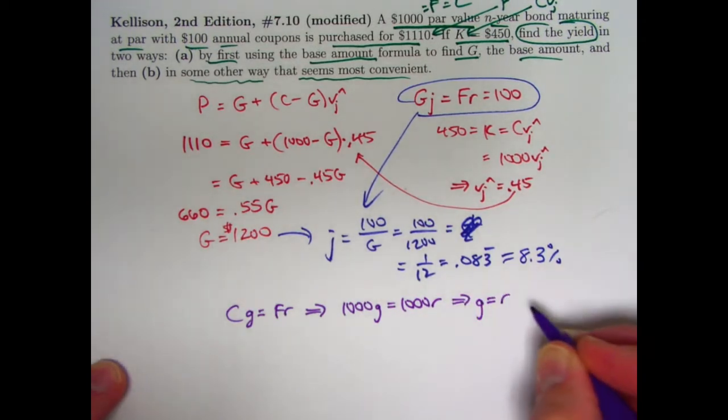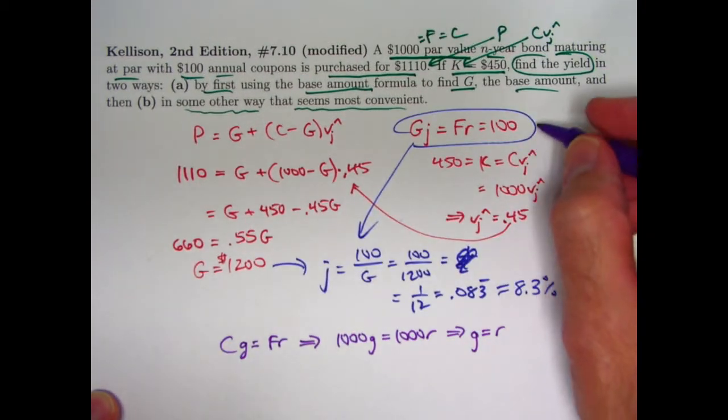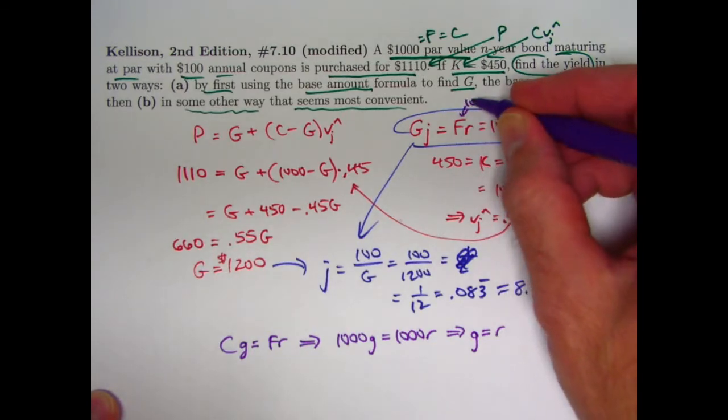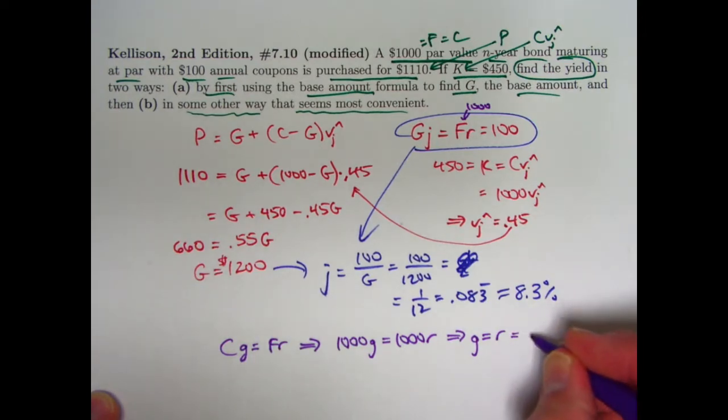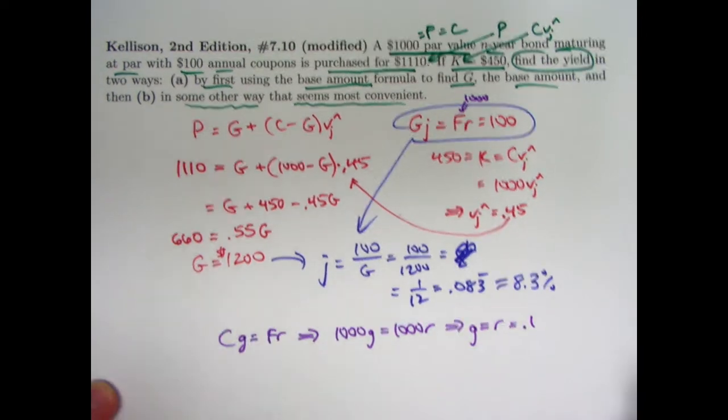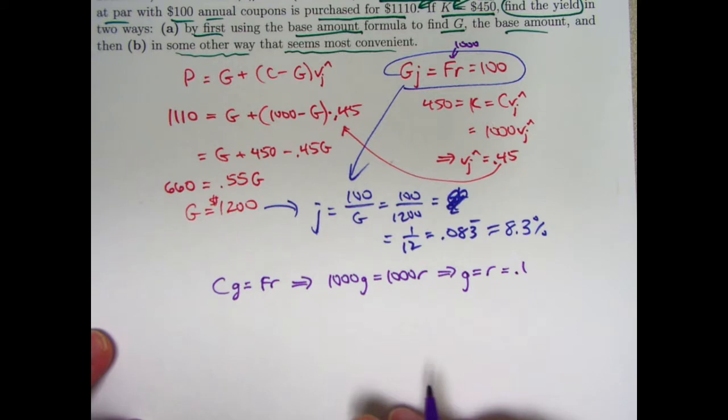G equals R, which if you think about it here, is got to be 10% because F was 1,000. R is 100 divided by 1,000. That will be 1/10 or 0.1 or 10%. Based on this knowledge, perhaps it's easiest to use Makeham's formula for the price.